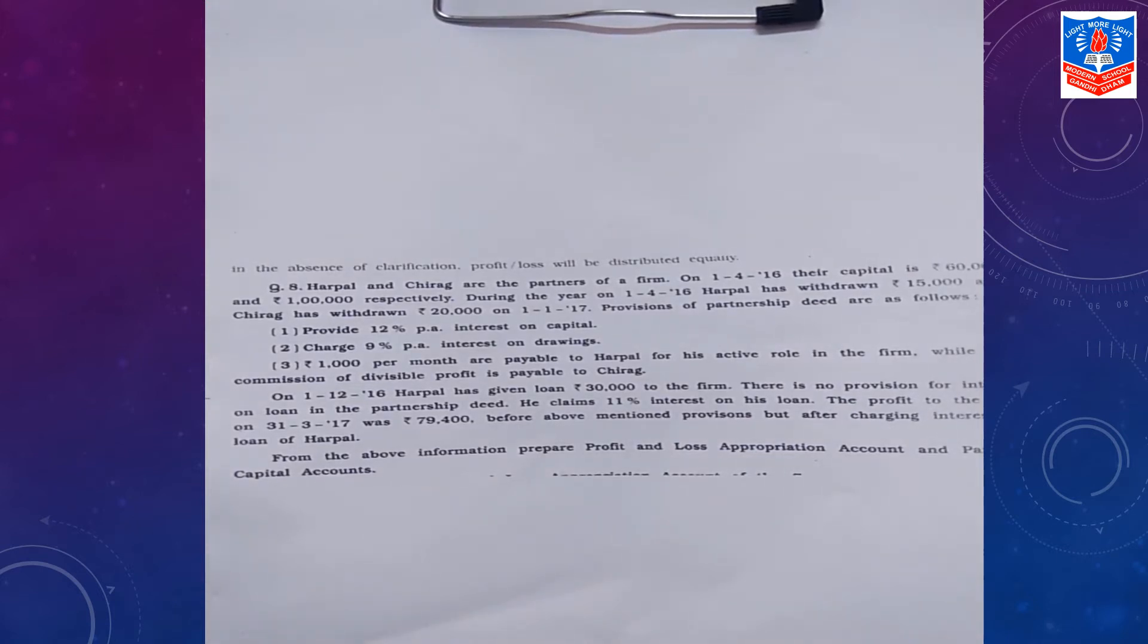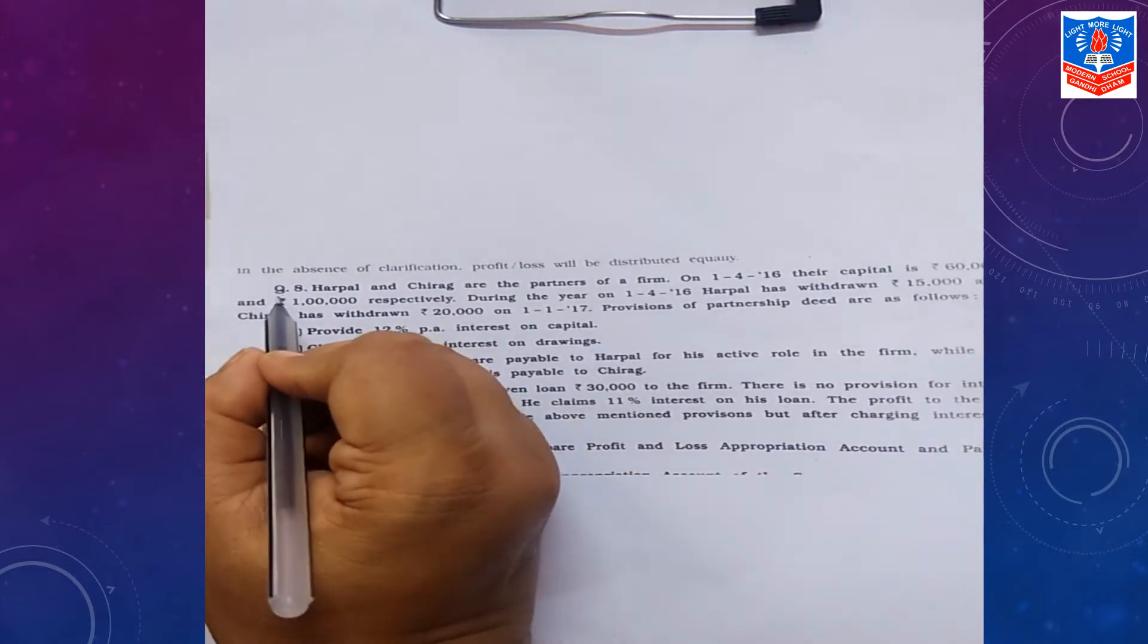Okay, dear students, now let us understand working of profit and loss account and partner's capital account with first method of maintaining capital, that is fluctuating capital account. We are taking question number 8 of textbook.